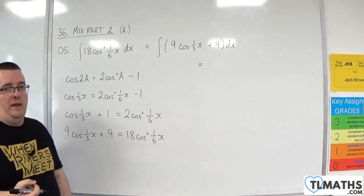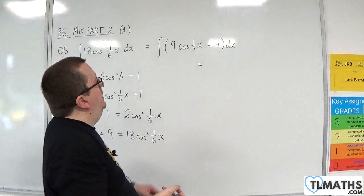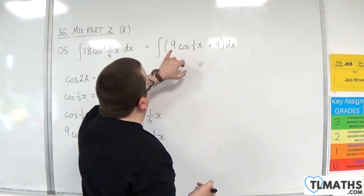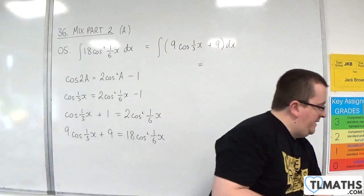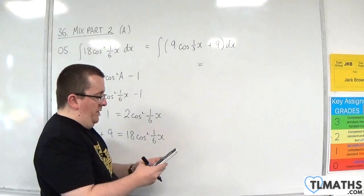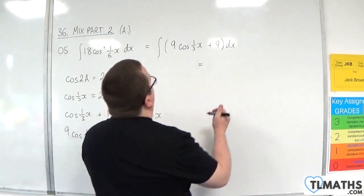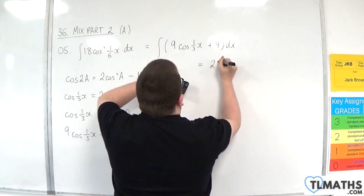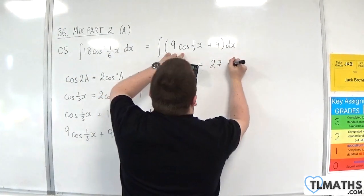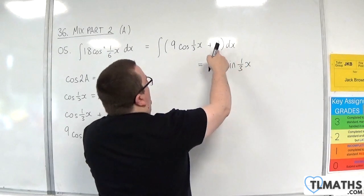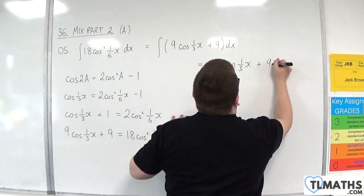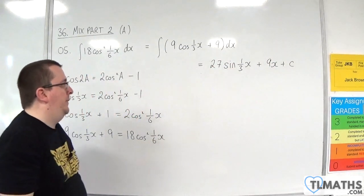Now, cosine is going to integrate to sine. We've got the 9 out front and the coefficient is one-third. So, we need to do 9 divided by one-third, which is 27. So, we're going to have 27 sine of one-third x, and the 9 integrates to 9x plus a constant C.